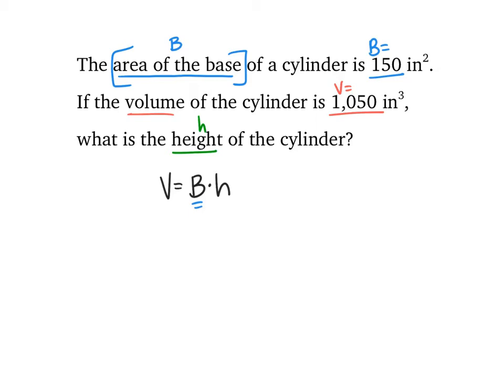I know that capital B is worth 150, and I know that my volume, or V, is 1,050. And then what I'm looking for is h. So I start with my formula and plug in values.